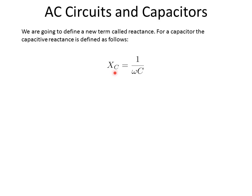It's defined as follows: the capacitive reactance, X sub C, is equal to 1 divided by the angular frequency times the capacitance, or the value of the capacitor.